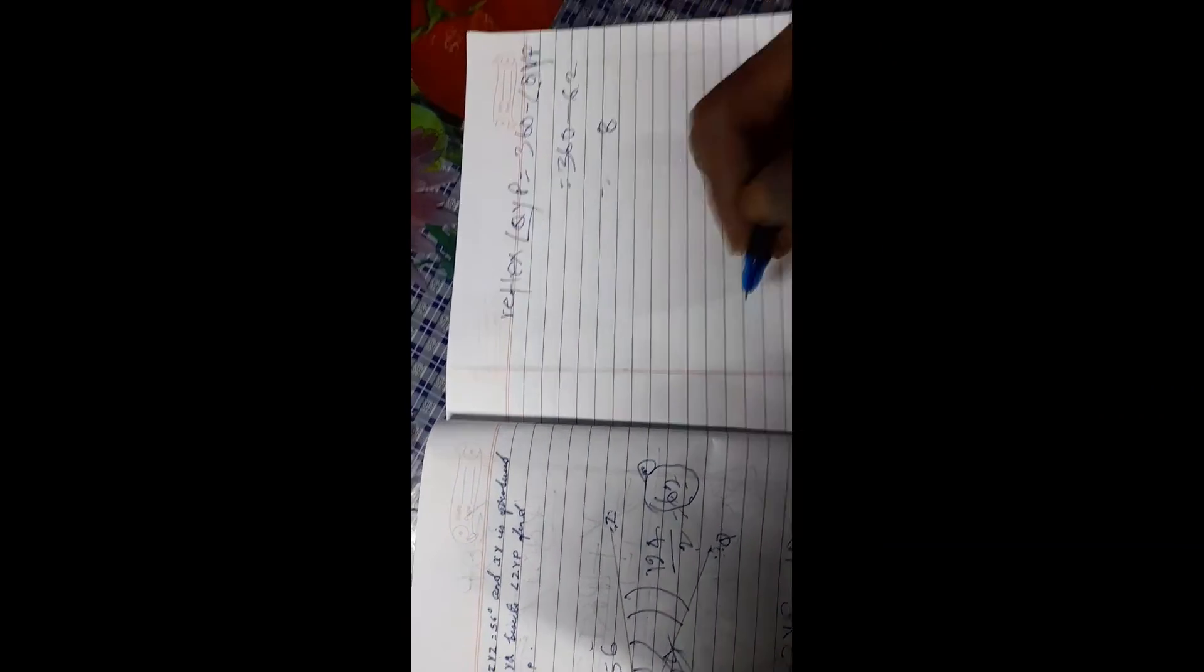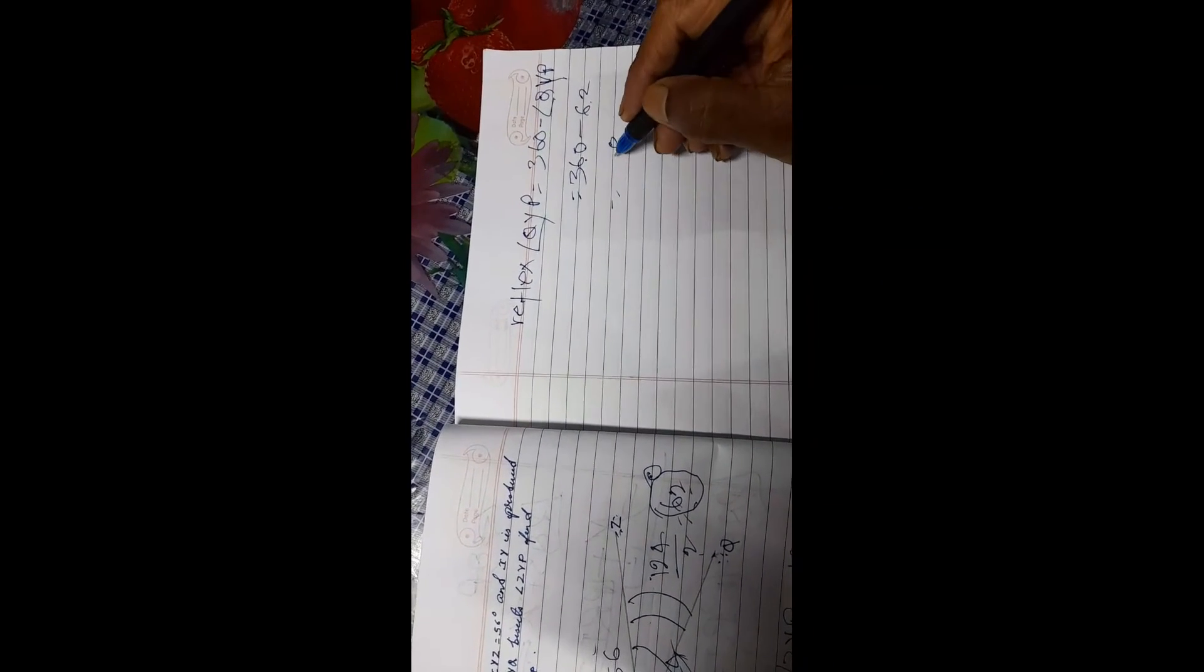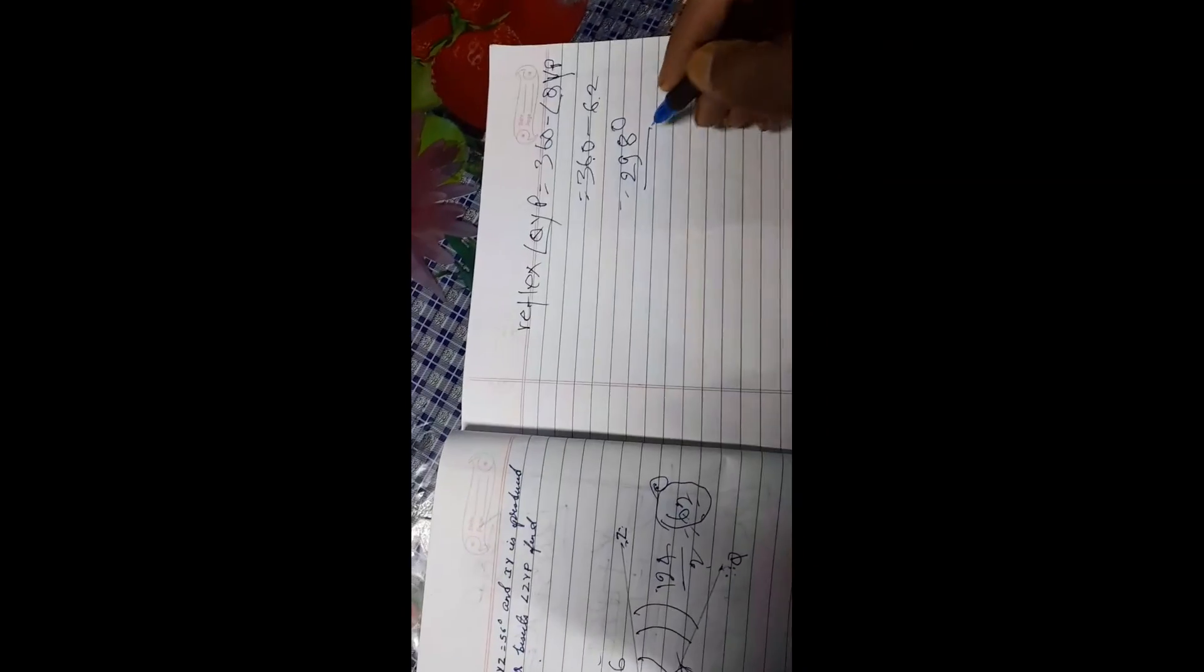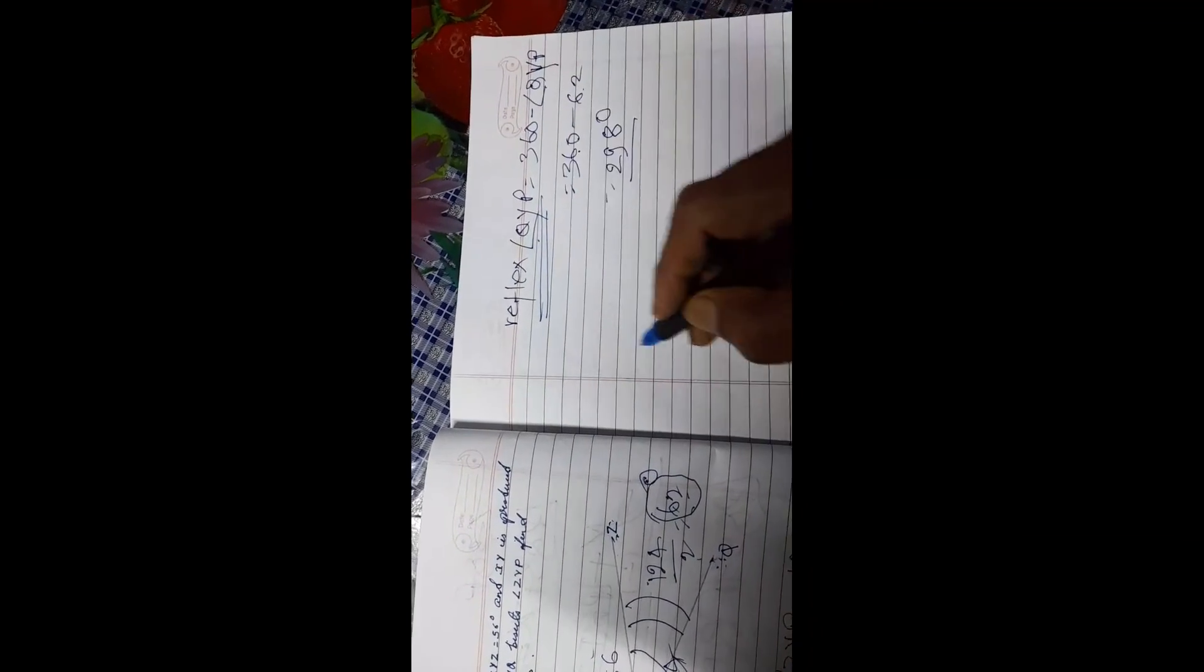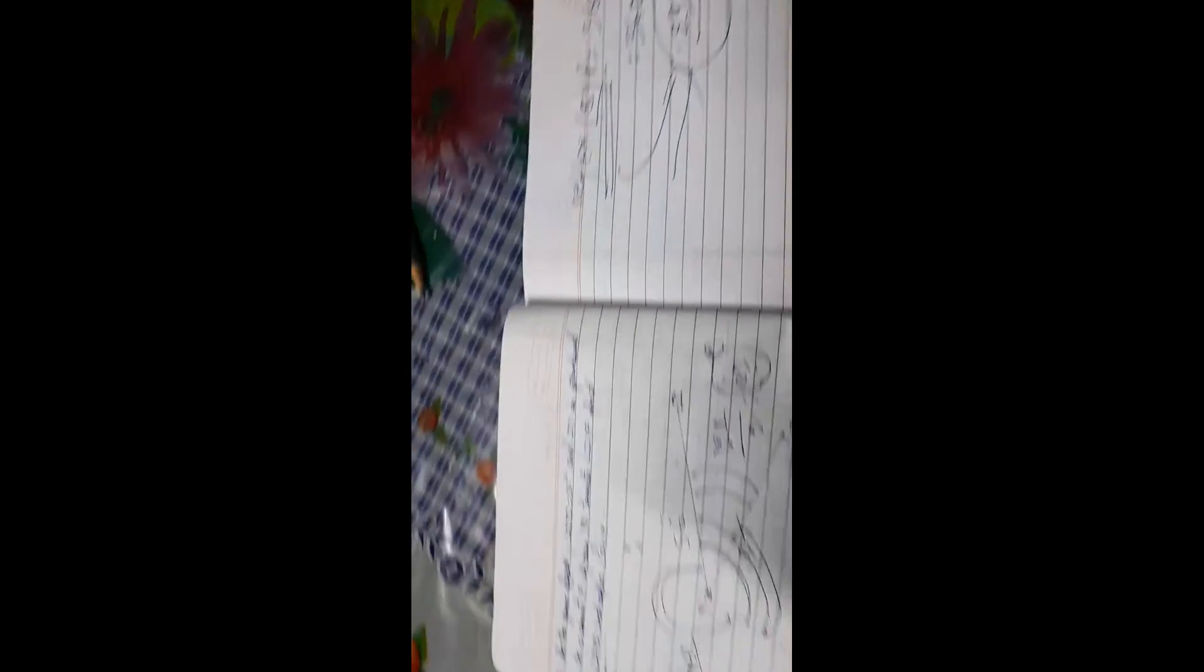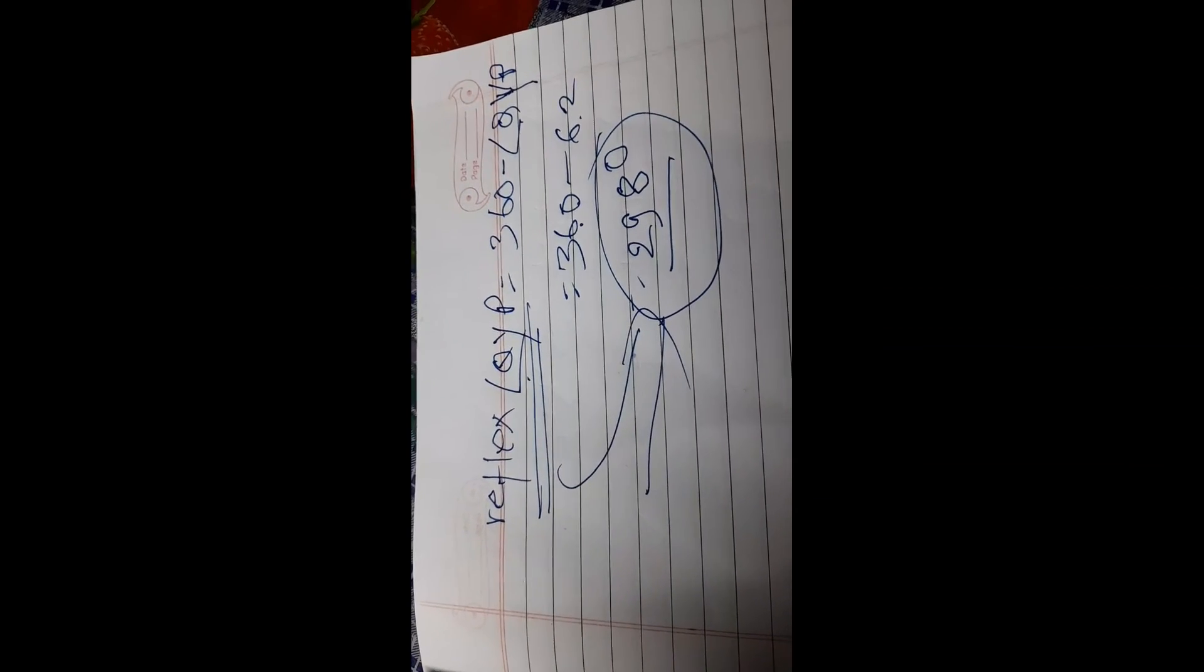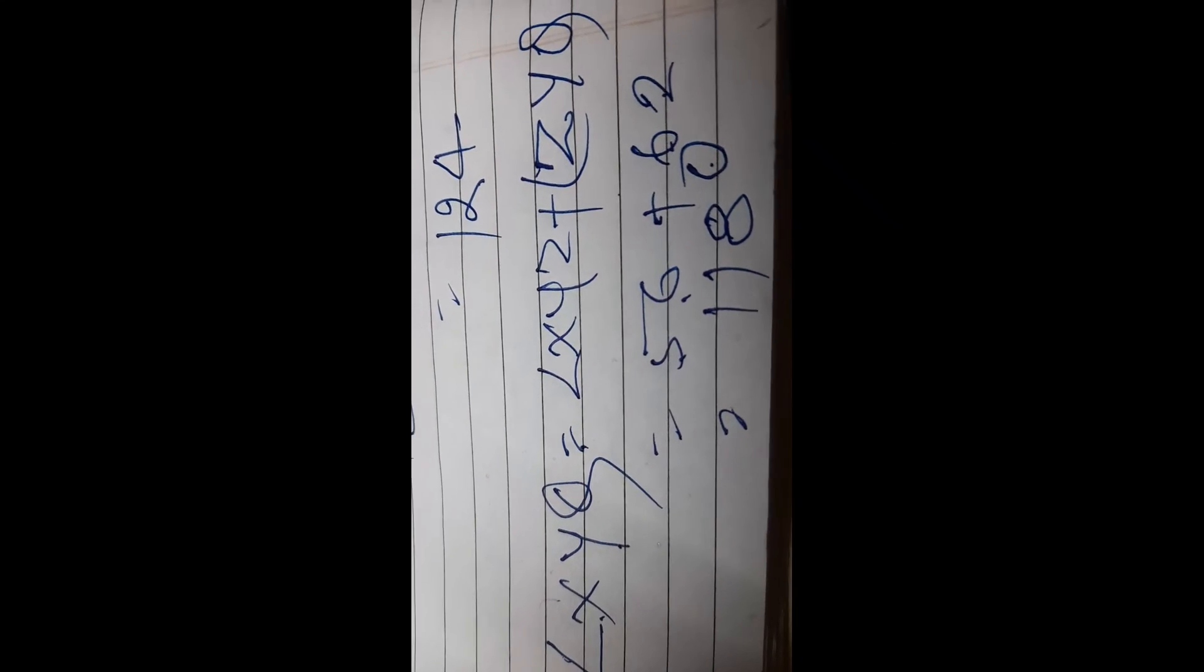10 minus 2 is 8, 15 minus 6 is 9, so it is 298 degrees. Reflex QYP is 298 degrees, and angle XYQ equals 118 degrees.